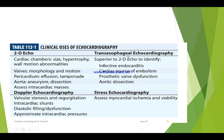Transesophageal echocardiography, or TEE, is superior to two-dimensional echo for identifying infective endocarditis, which is one of the more fatal forms of cardiac disease. TEE is also used when there is a cardiac source of embolism and for artificial or prosthetic valve dysfunction. For aortic dissection, TEE is again superior to two-dimensional echocardiography.